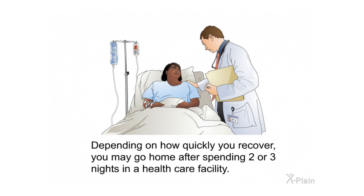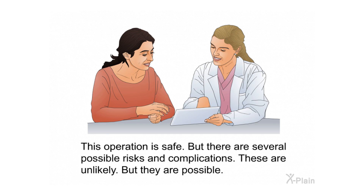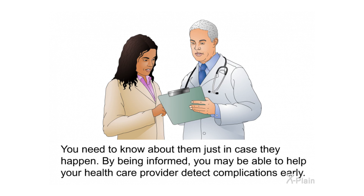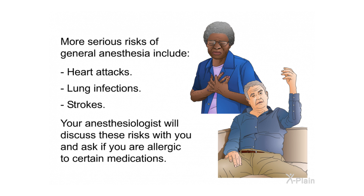Depending on how quickly you recover, you may go home after spending two or three nights in a health care facility. Risks and complications: this operation is safe, but there are several possible risks and complications. These are unlikely but possible — you need to know about them so that you may help your health care provider detect complications early. Risks include those related to anesthesia, such as cut lips and chipped teeth, headache, nausea or vomiting, problems urinating, and sore throat. More serious risks of general anesthesia include heart attacks, lung infections, and strokes. Your anesthesiologist will discuss these risks with you and ask if you are allergic to certain medications.